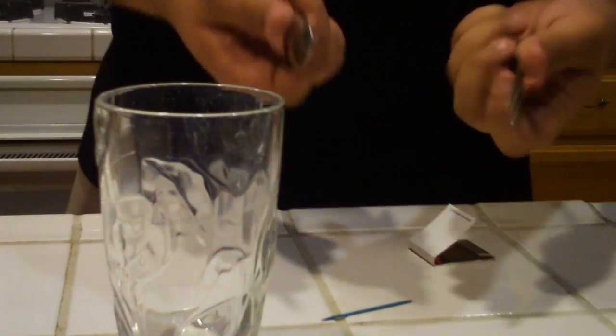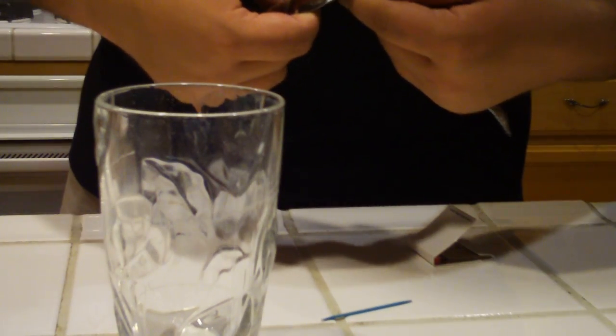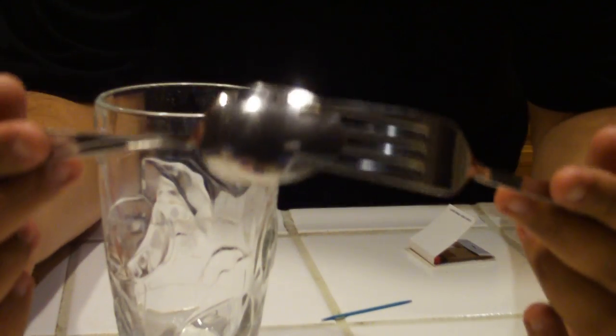First of all, we have the setup. It's pretty easy. Fork and a spoon, interlock them like that.